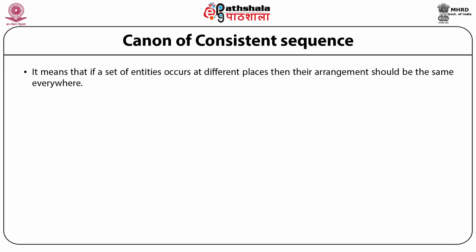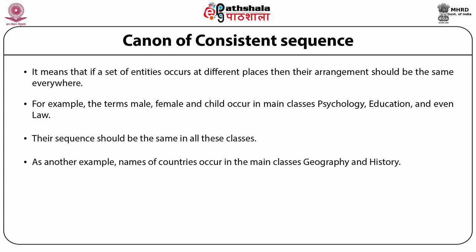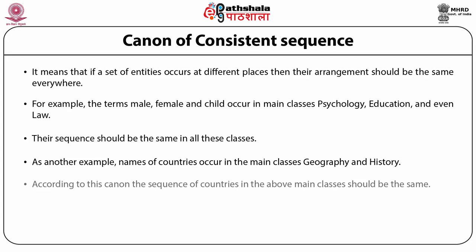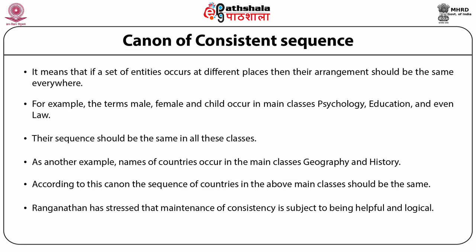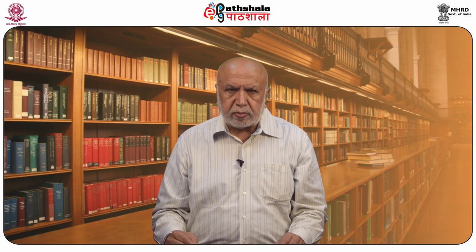Canon of Consistent Sequence means that if a set of entities occurs at different places, their arrangement should be the same everywhere. For example, the terms male, female, and child occur in psychology, education, law, and medicine — their sequence should be the same in all these classes. Similarly, names of countries occur in geography and history, and names of languages in linguistics and literature — their sequence should be consistent across these main classes. Ranganathan has stressed that maintenance of consistency is subject to being helpful and logical. Consistency can also be ensured by observing the canon of mnemonics in notation.